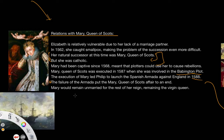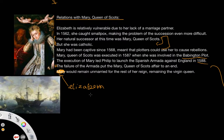Elizabeth would remain unmarried for the rest of her reign, remaining the Virgin Queen. Fundamentally, her marriage and succession issues could be seen as more positive than negative. While it left her relatively vulnerable, the positive was that she could tailor her foreign policy accordingly and gain favour with different European monarchs by holding out the hope that she might marry them.